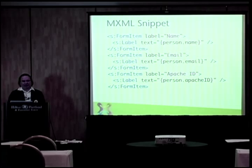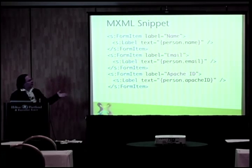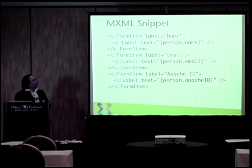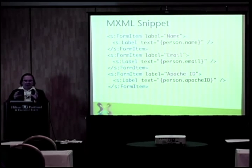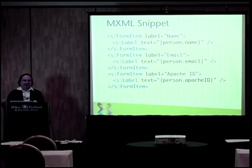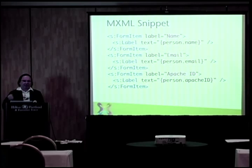Here's some MXML — just a snippet from a very simple application. You can see it's XML and there are several form items with some labels. Where it says text equals person.name, that is binding to a name property of an instance of a class of type Person. Whenever that property changes, that text label will get updated. You don't have to write any other code for that to happen.